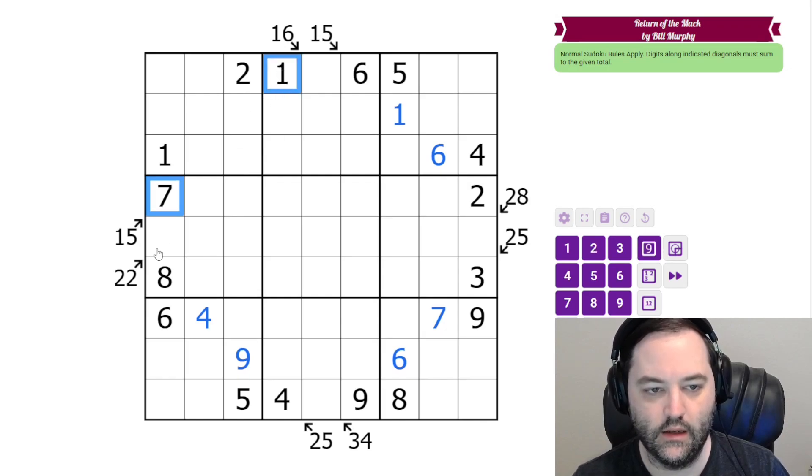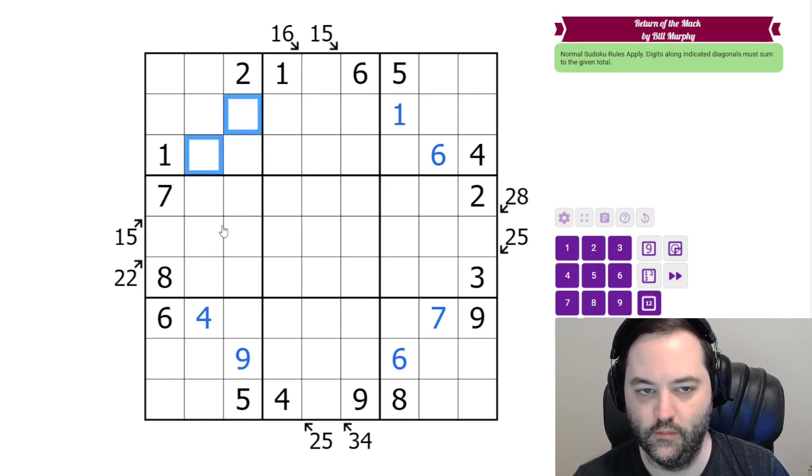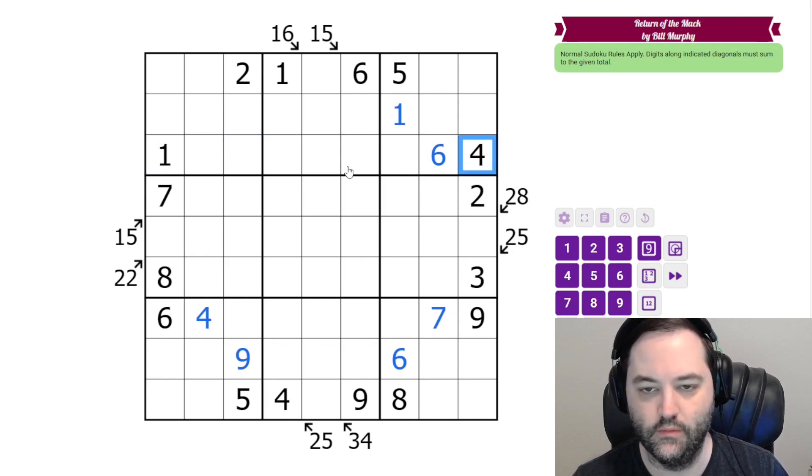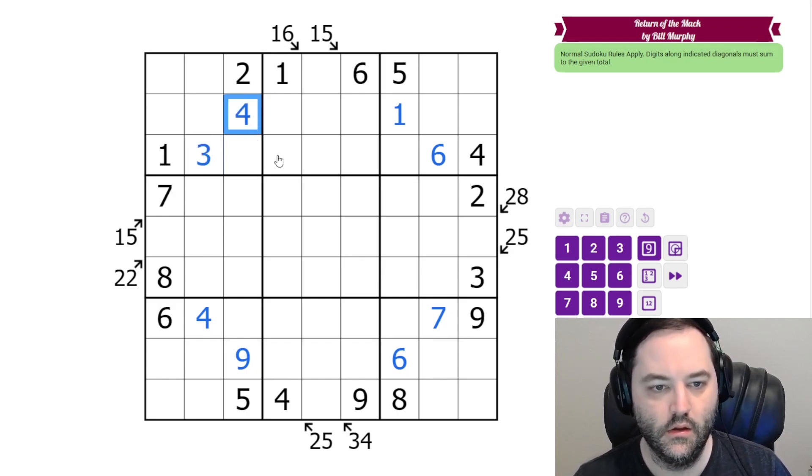And here we have eight again on a 15. So these sum to seven. Can't have one, six. We can't have two, five. So we have to have three, four, and four. Plus 60. Okay.